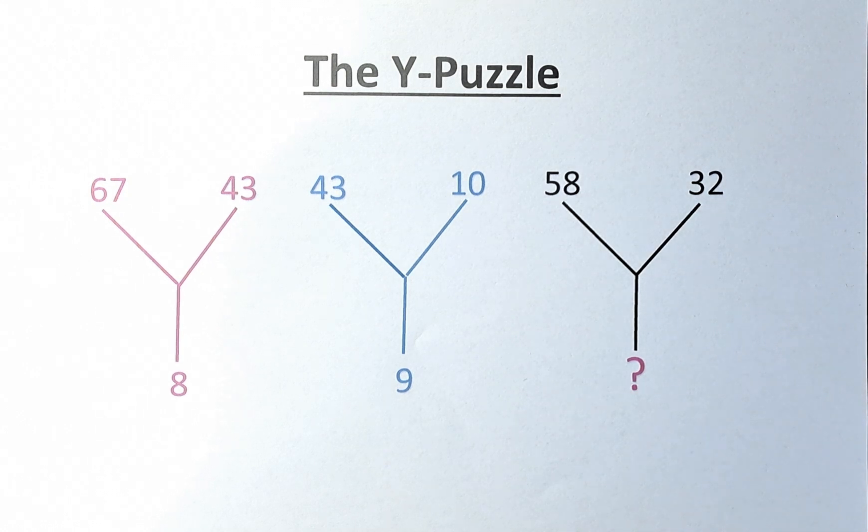Welcome back to the solution of the Y puzzle. The numbers are 67, 43, 8 in the first Y, 43, 10 and 9 in the second Y, and 58, 32 and a question mark in the last Y. So what is the number that is represented by the question mark?